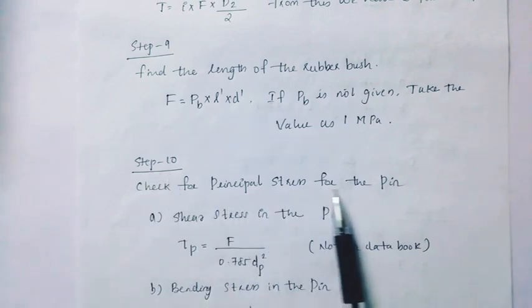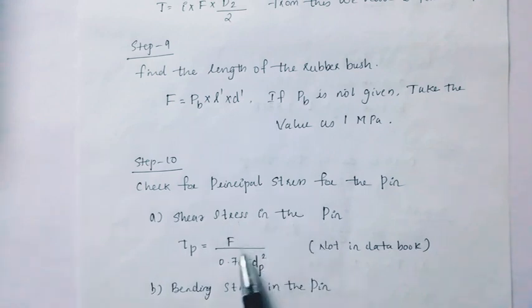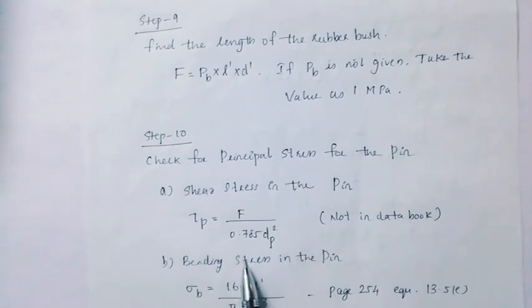Step 10: Check for principal stress for the pin. A. Shear stress in the pin: tau p equal to f divided by 0.785 into d square p. Note: in data book, this equation is not available.